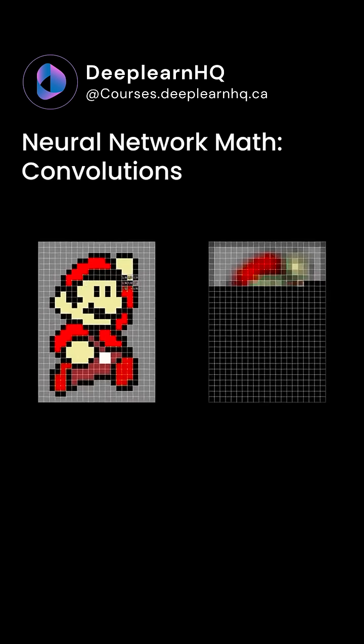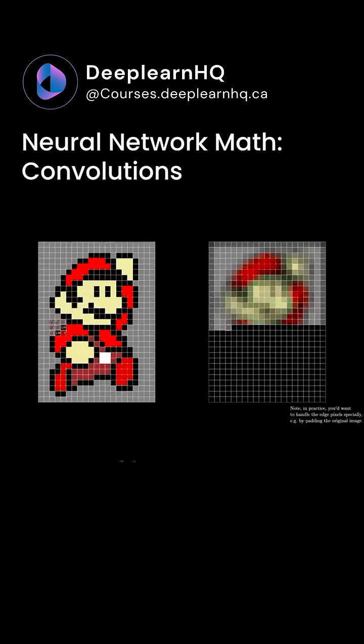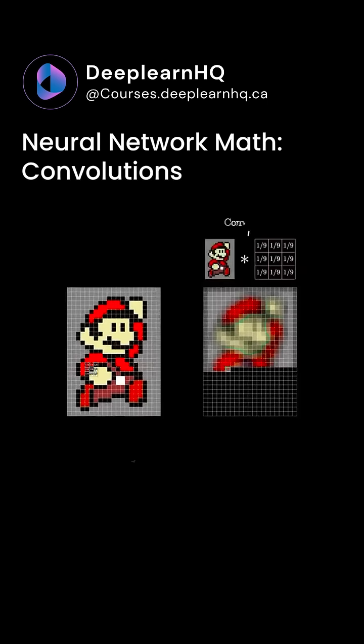The overall effect as we do this for every single pixel on the image is that each one kind of bleeds into all of its neighbors, which gives us a blurrier version than the original. In the lingo, we'd say that the image on the right is a convolution of our original image with a little grid of values.